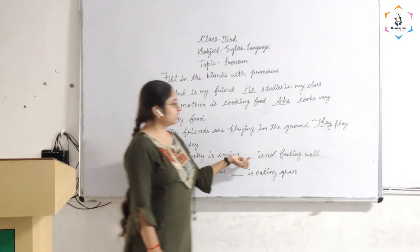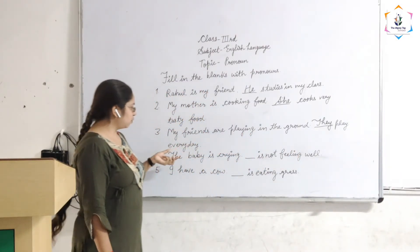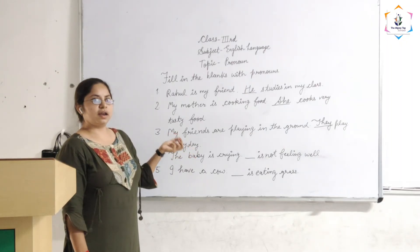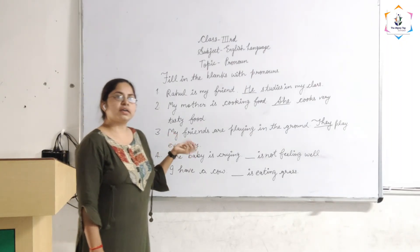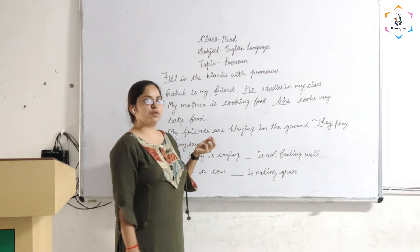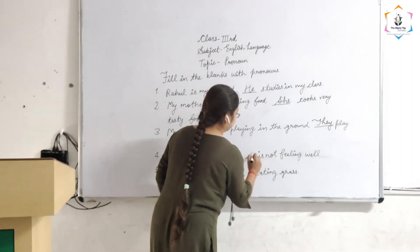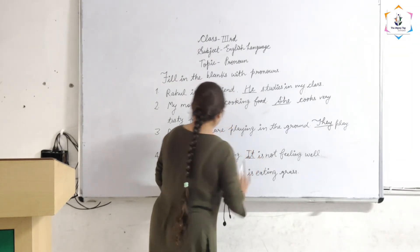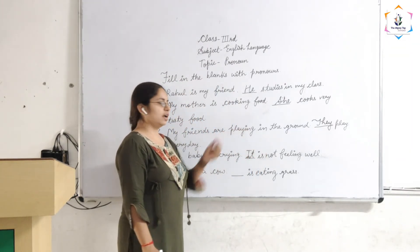Next: 'The baby is crying. ___ is not feeling well.' The noun here is 'the baby'. Now the baby can be male or female — we don't know. So for a baby of unknown gender, we use 'it'. Answer: 'The baby is crying. It is not feeling well.'